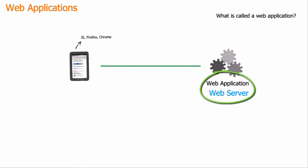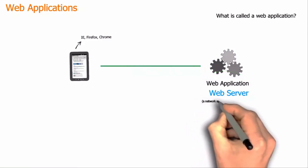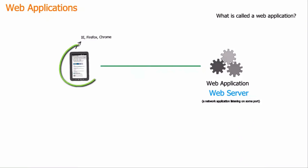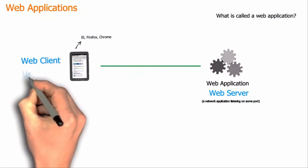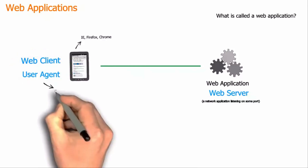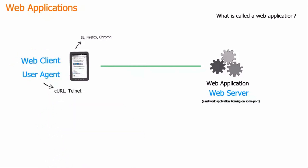A web server is actually a network application running on some machine, listening on a port. The browser is actually called a web client, or more formally, a user agent. And in fact, web clients are not only browsers, but any application which can speak to a web server — like CURL or Telnet — those are also web clients or user agents.